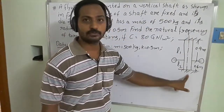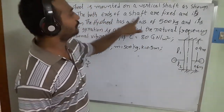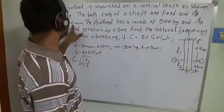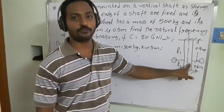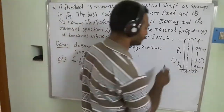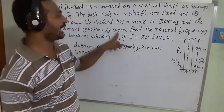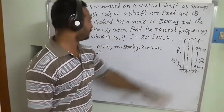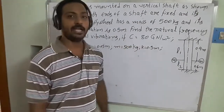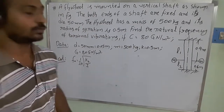A flywheel is mounted on a vertical shaft. Both ends of the shaft are fixed, and the shaft diameter is 50 mm. The flywheel has a mass of 500 kg, its radius of gyration k is equal to 0.5 meters. Find the natural frequency of the torsional vibrations if the modulus of rigidity G is equal to 80 GPa (gigapascal per meter squared).